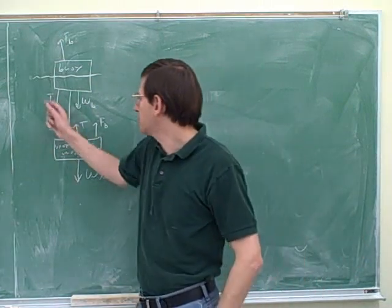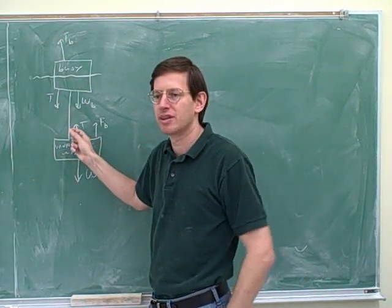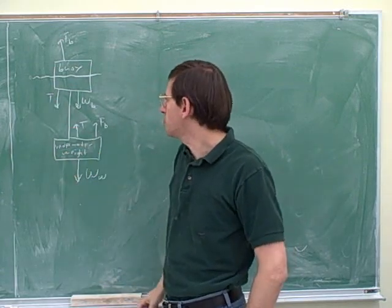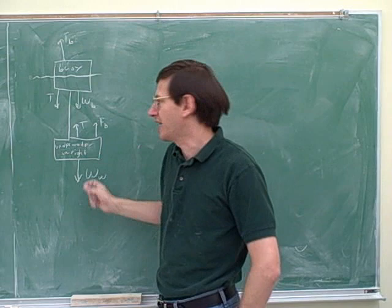Now, the key when there's more than one object is, we have to use the same symbol for things that are the same, and different symbols for things that are different. That seems pretty trivial, but that actually is the key to this type of problem. For example, are these two tensions the same or different? They're the same. Yeah, at least in magnitude.